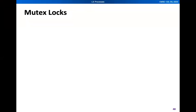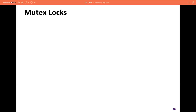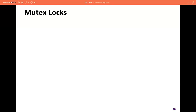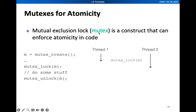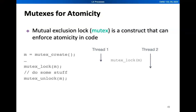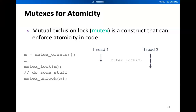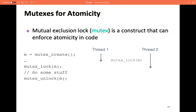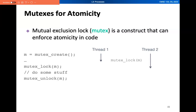This is another solution on how we can avoid race conditions, or a solution to the critical section problem. We have mutex locks — mutex is short for mutual exclusion. A mutex is a construct that can enforce atomicity in code, or it is a synchronization mechanism that allows us to protect shared resources and ensure they are only accessed by one thread at a time.